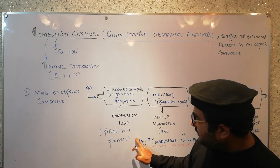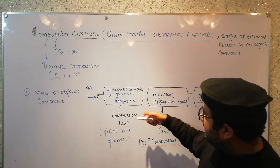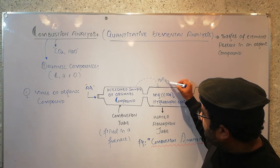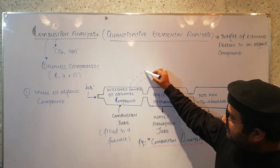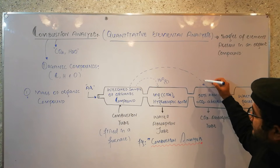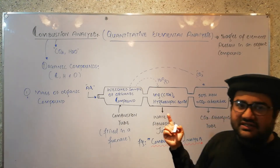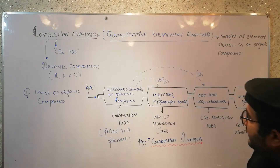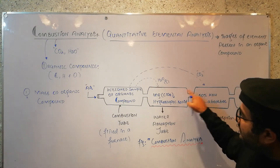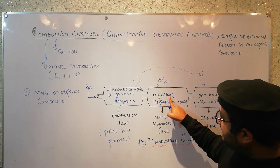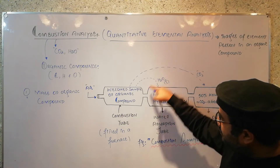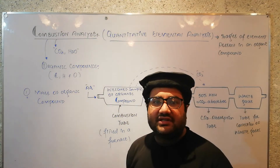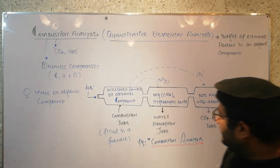The furnace is turned on and the organic compound is combusted. When it is combusted, water vapors are formed. These water vapors are captured by the magnesium perchlorate, and carbon dioxide is formed. This carbon dioxide is absorbed by the 50% KOH. When the whole organic compound is combusted, we dismantle the apparatus and focus on these two tubes. After combustion, when water and CO2 are absorbed in their respective chambers, the tubes are weighed again.